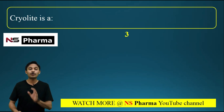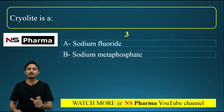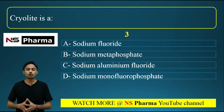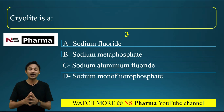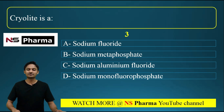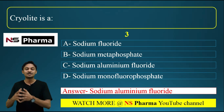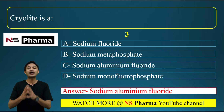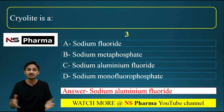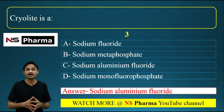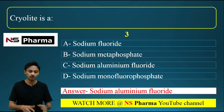Question number 3: Cryolite is — options are: A) sodium fluoride, B) sodium metaphosphate, C) sodium aluminium fluoride, D) sodium monofluorophosphate. The correct answer is option C, sodium aluminium fluoride. Cryolite is a mineral found in Greenland and was previously used as a source of aluminium.